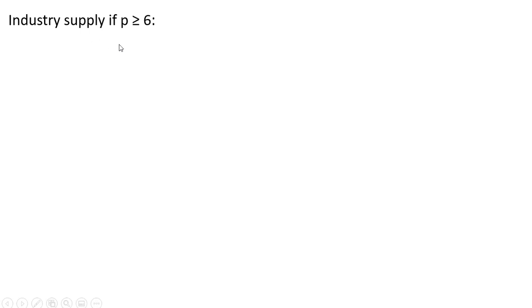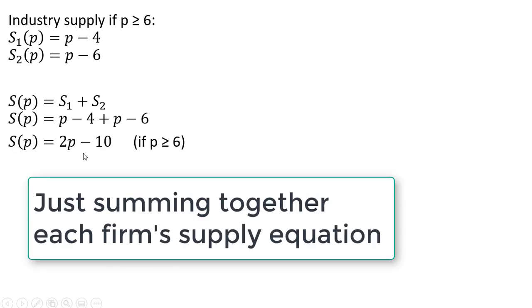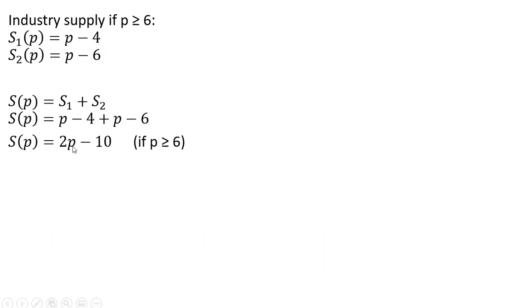The industry supply, if the price is greater than or equal to $6, will be as follows. We get 2p minus 10. And again, this occurs if price is greater than or equal to 6. If price is $6, for example, the total industry supply here will be 2 units.